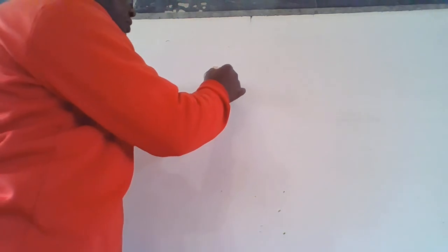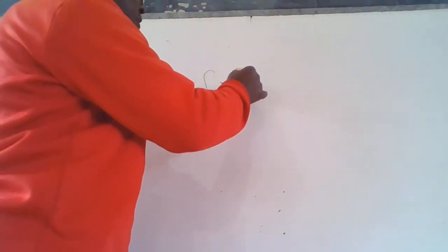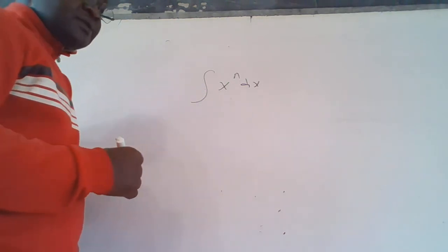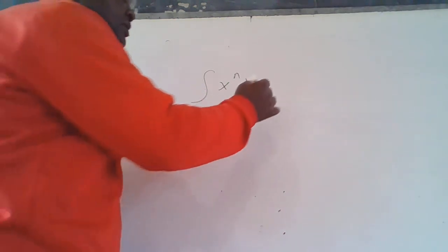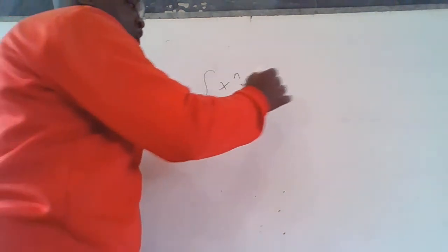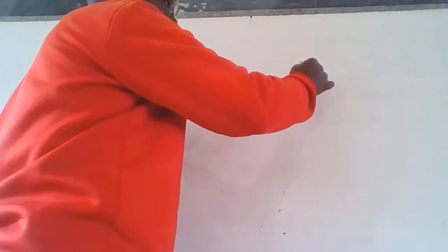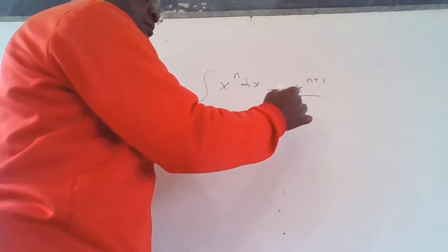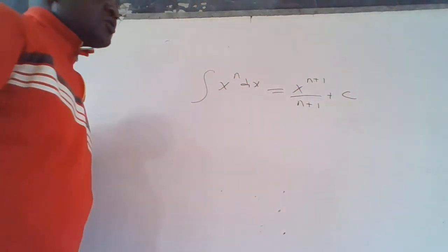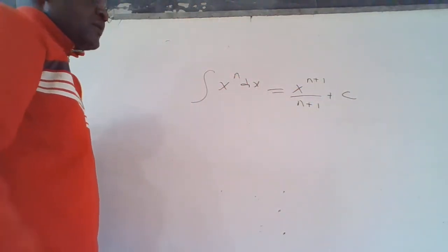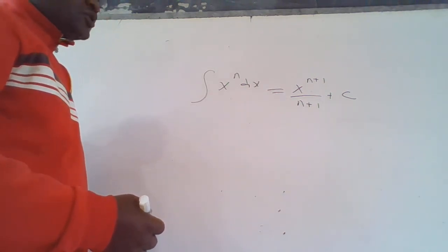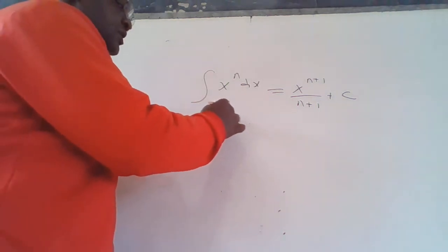The general way of integration: x raised to n, then dx. If we want to integrate this expression, the formula is x raised to n+1 over n+1, plus the constant of integration. This is the formula we will be using to perform integration.